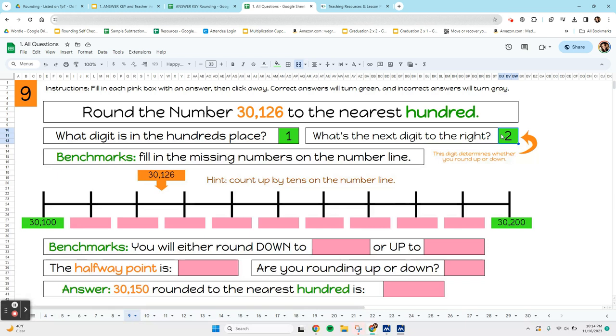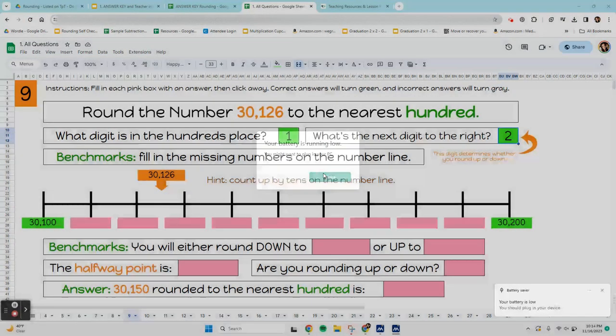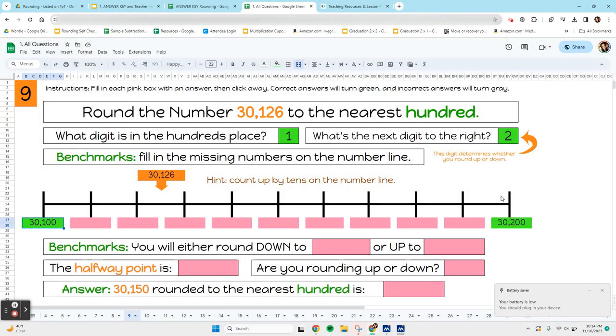and you want to locate it between two benchmarks and see if it's closer to the bottom benchmark or closer to the upper benchmark. So, we're either going to be rounding down to 30,100, or we'd round up to 30,200.